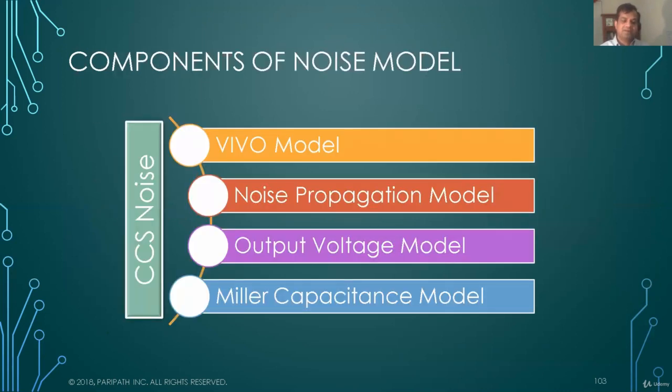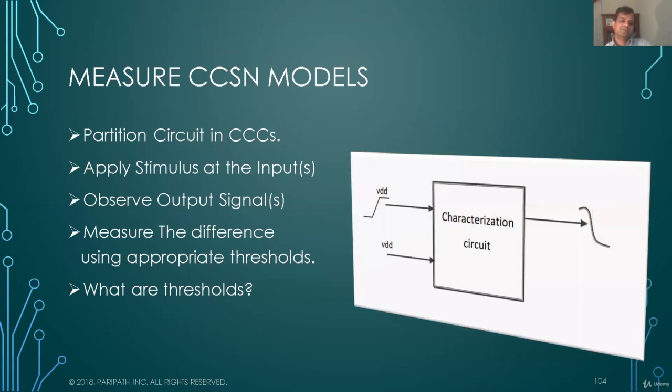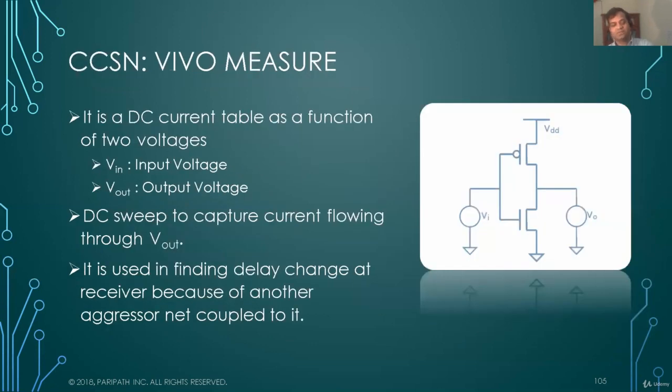And components of the noise model, essentially there are four. One is VIVO model, second is a noise propagation model, third is output voltage model, and the fourth one is Miller Capacitance model. How do we measure? Same thing that we did for other models, supply the input, measure the outputs and see what's going there.